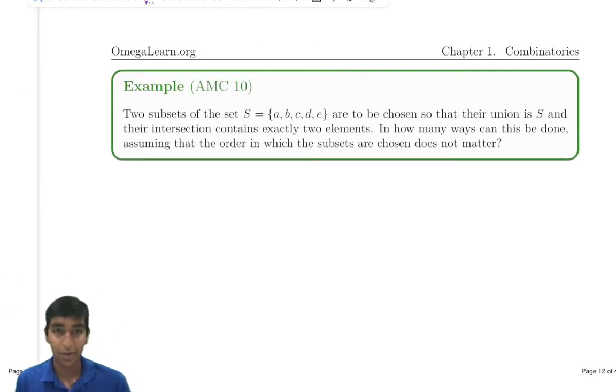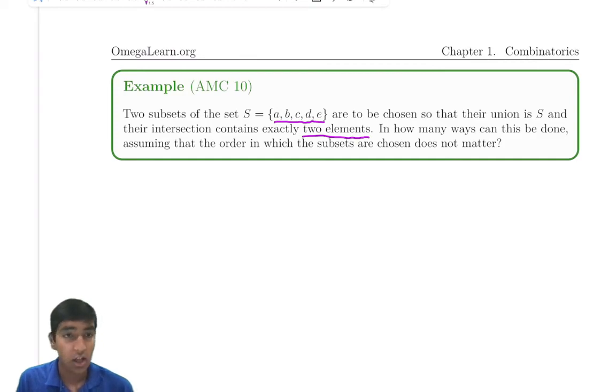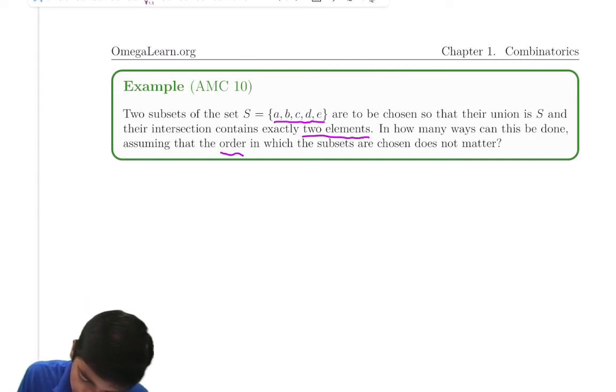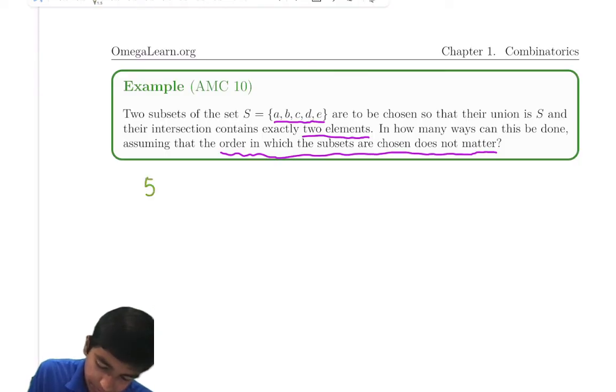Let's take one example of where it can be used. Two subsets of the set S equals A, B, C, D, E are to be chosen so that their union is S, and their intersection contains exactly two elements. In how many ways can this be done, assuming that the order in which subsets are chosen does not matter? First, let's choose which two elements will be the intersection. We have five elements. Pick two of them to be the intersection. 5 choose 2 equals 10. Or 5 times 4 divided by 2 is 10.